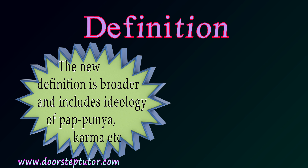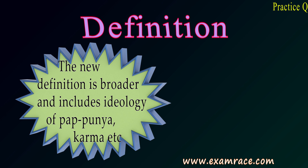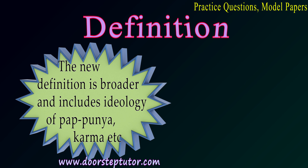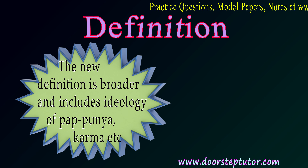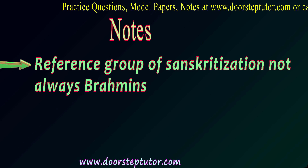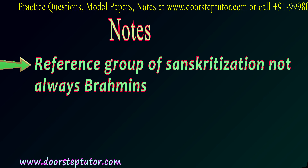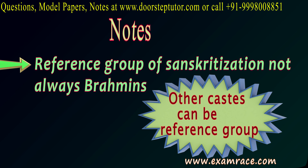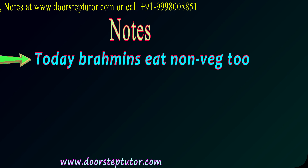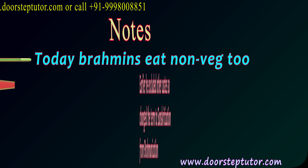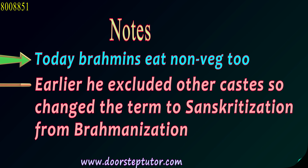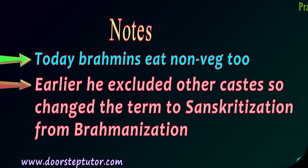The definition was broadened because it now includes lower caste, tribe, and other groups. It also included the ideology of karma, pap, and punya. The definition had to change because the reference groups in Sanskritization are not always Brahmins — lower caste people can look up to other castes as reference groups. Even today, many Brahmins eat non-vegetarian food, so the reference group is not always Brahmins, which is why the term shifted to Sanskritization.